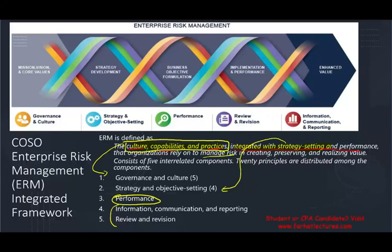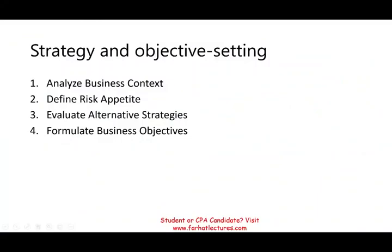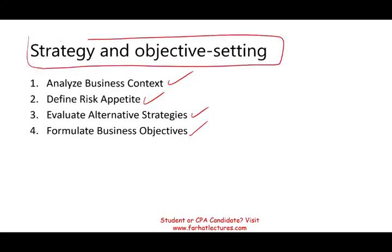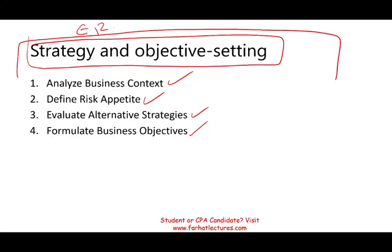So let's go ahead and start to talk about strategy and objective setting. The four principles in this session are: analyze business context, define risk appetite, evaluate alternative strategies, and formulate business objectives — all under the strategy and objective setting component of ERM.